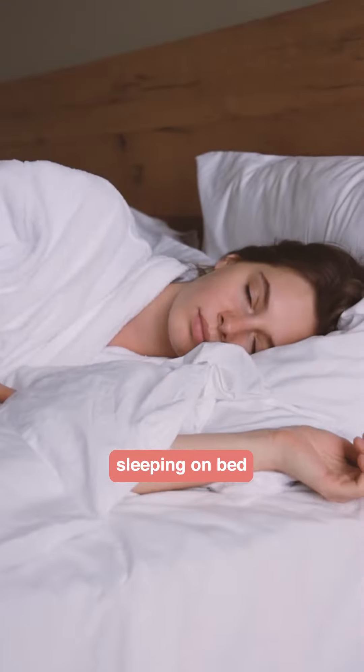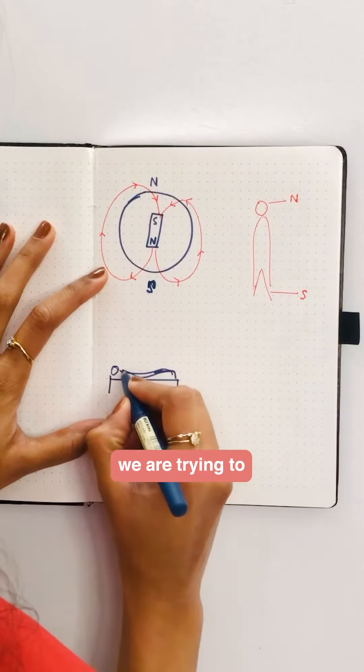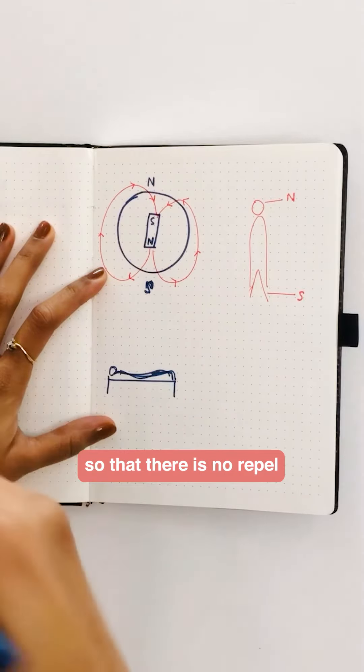So essentially, when we are sleeping on bed, what we are trying to do is we are trying to align the energies to the earth's energy so that there is no repelling.